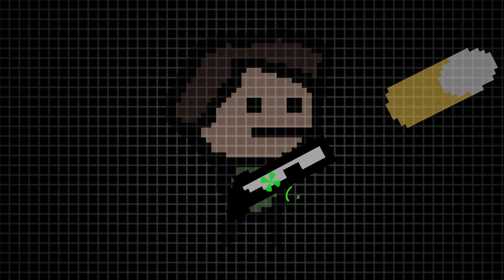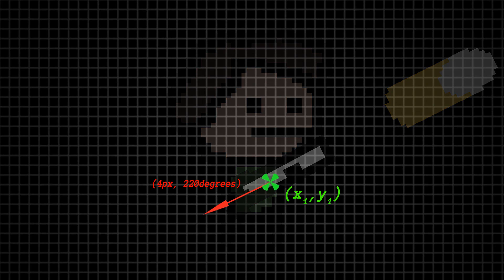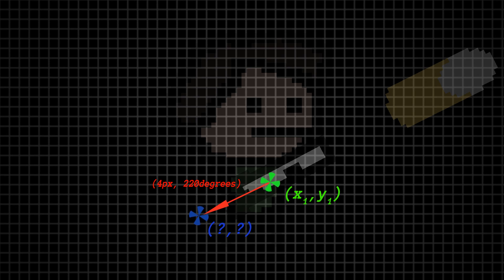We have an x and a y coordinate where our instance is, and we want to move in a particular direction. The problem is that we don't know the exact x and y that we want to end up in. If we did, we could just set our x and y to that. But we can't do that because we only know the angle we want to move at and the number of pixels we want to move in that direction.